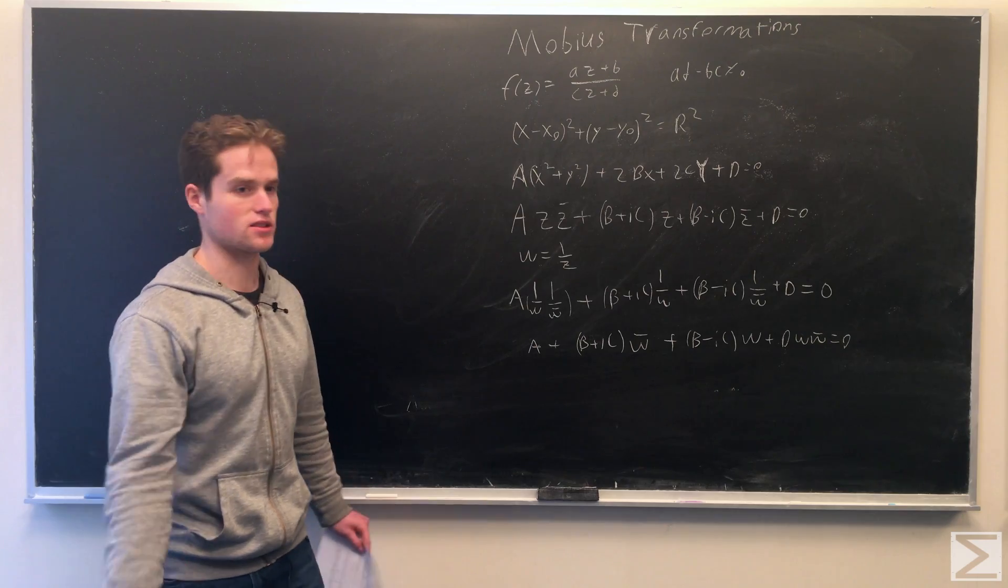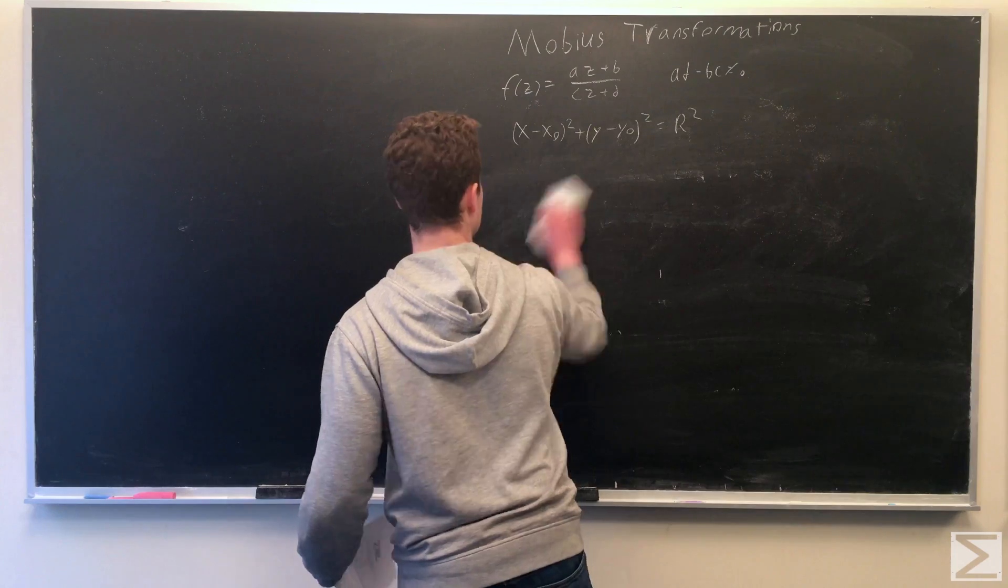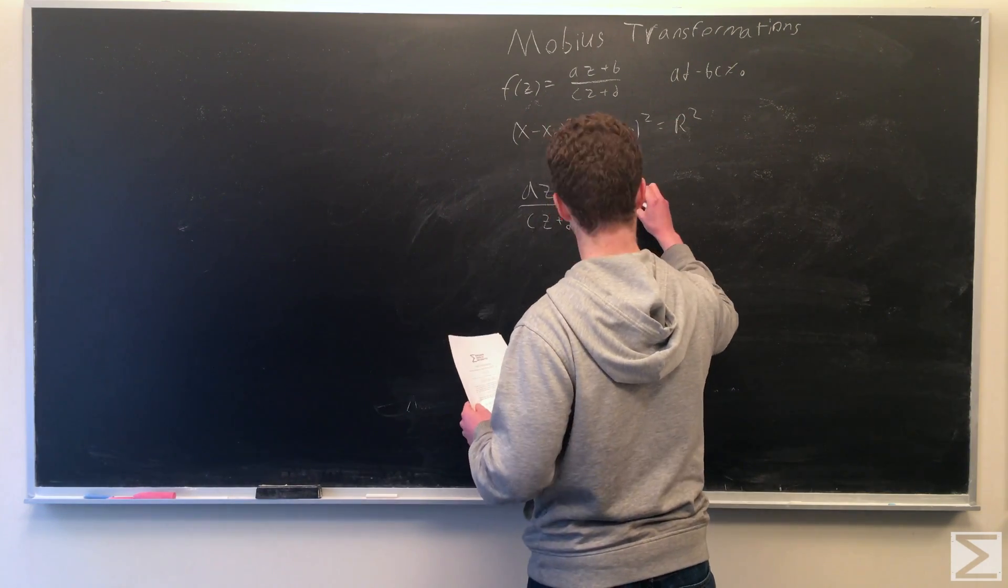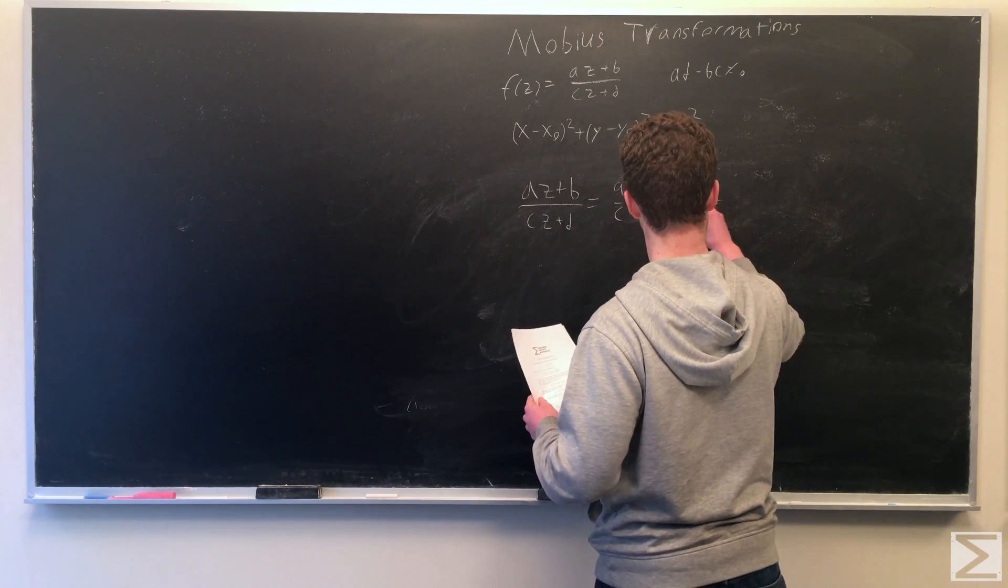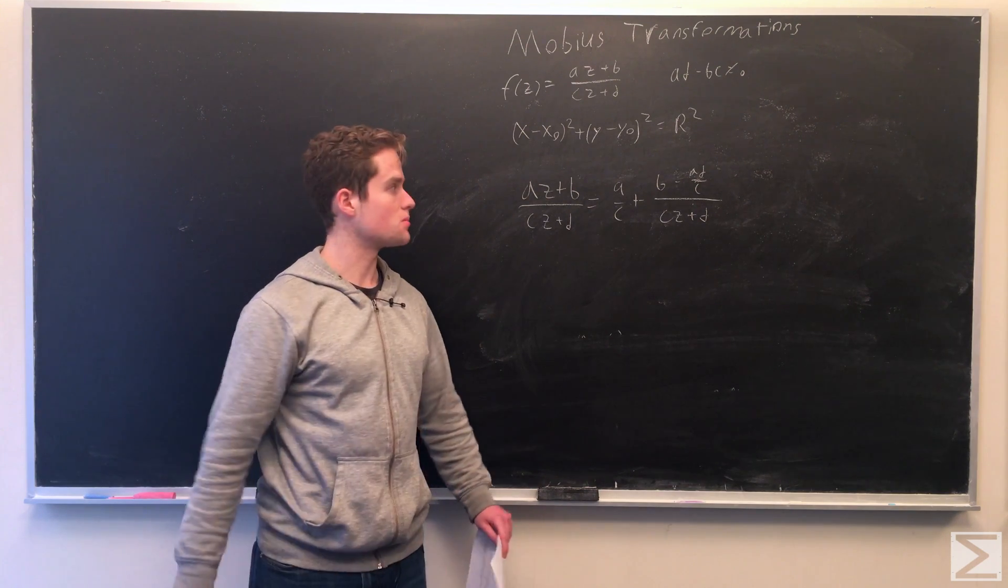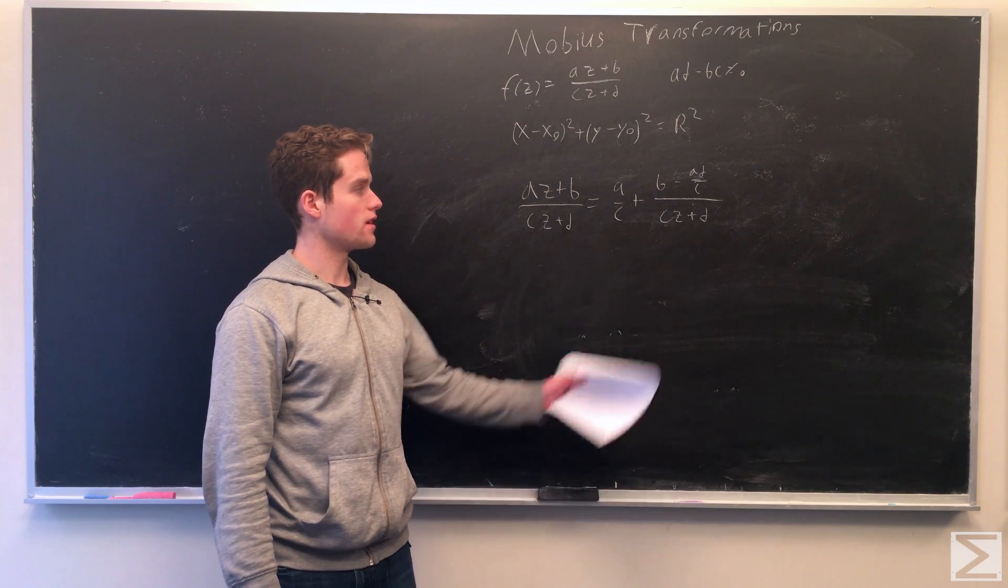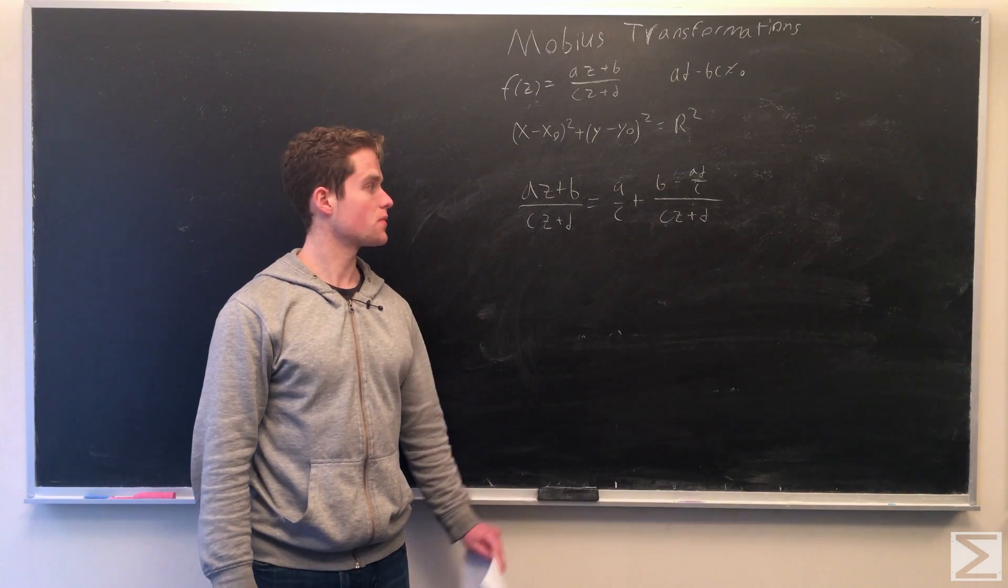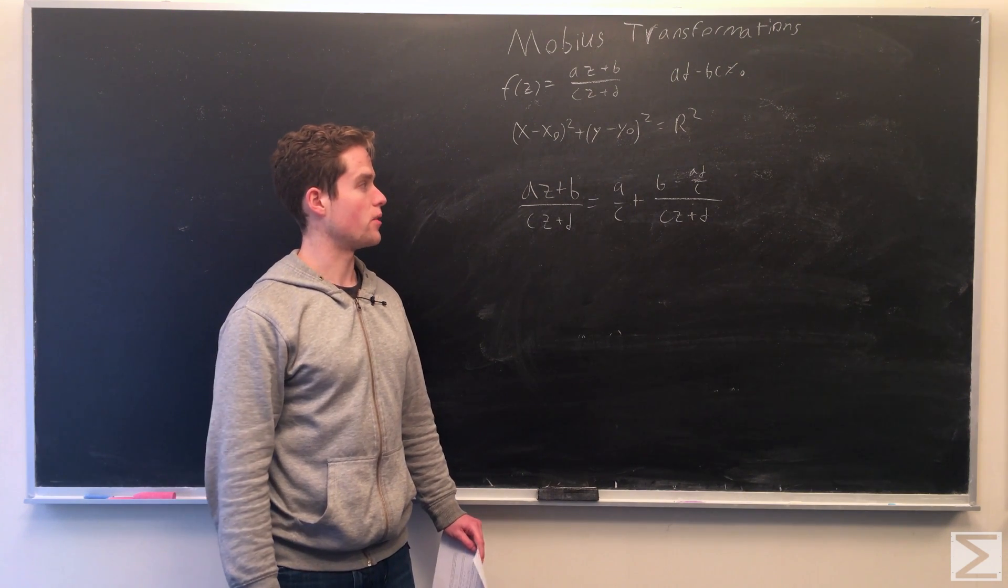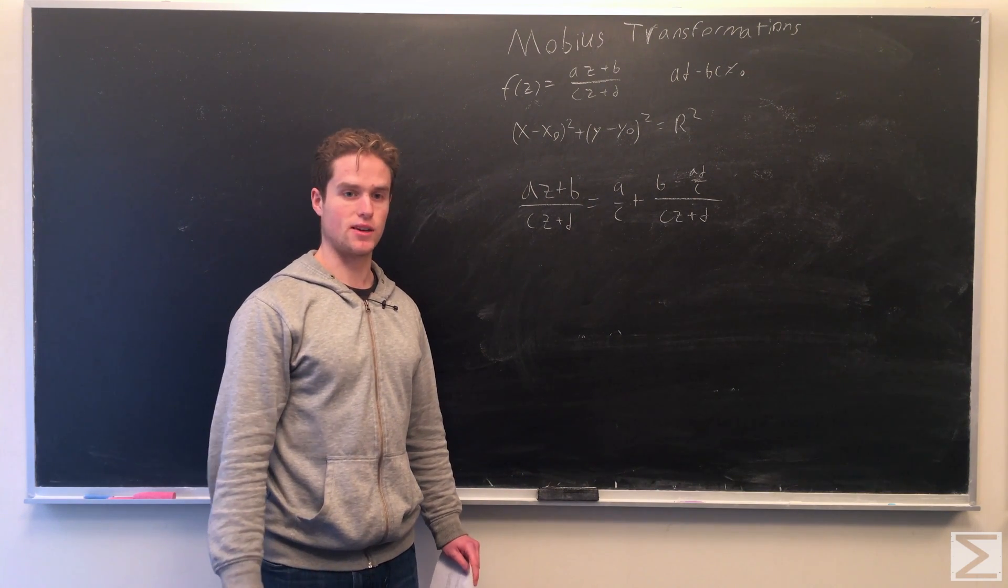So now we can write our Mobius transformation slightly differently. We're going to write our general Mobius transformation as a over c plus b minus ad over c over cz plus d. So we can think of this as three consecutive transformations. One cz plus d, one 1 over z, and then one a over c plus b minus ad over c.